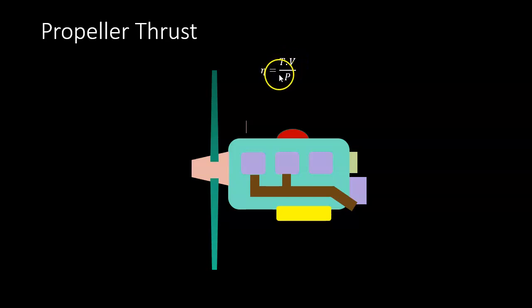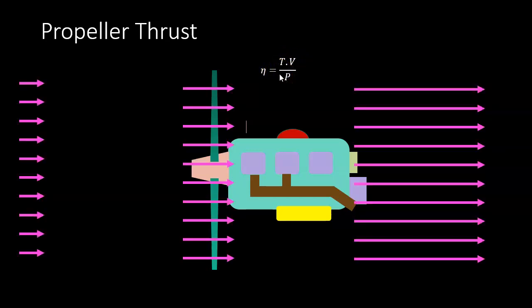We're going to look at momentum theory, which we covered in an earlier video. That theory is based on air coming in, being accelerated through the propeller, and going out into the slipstream at a faster velocity.